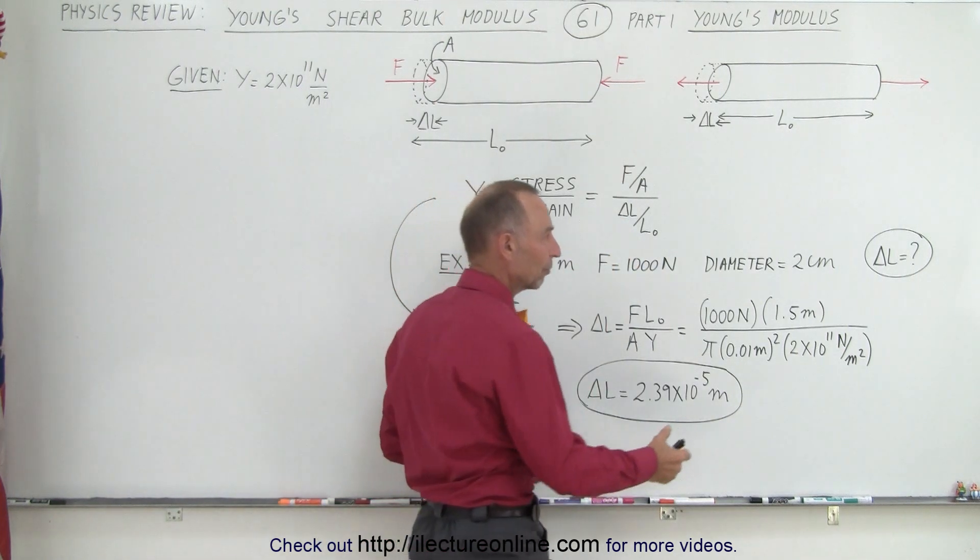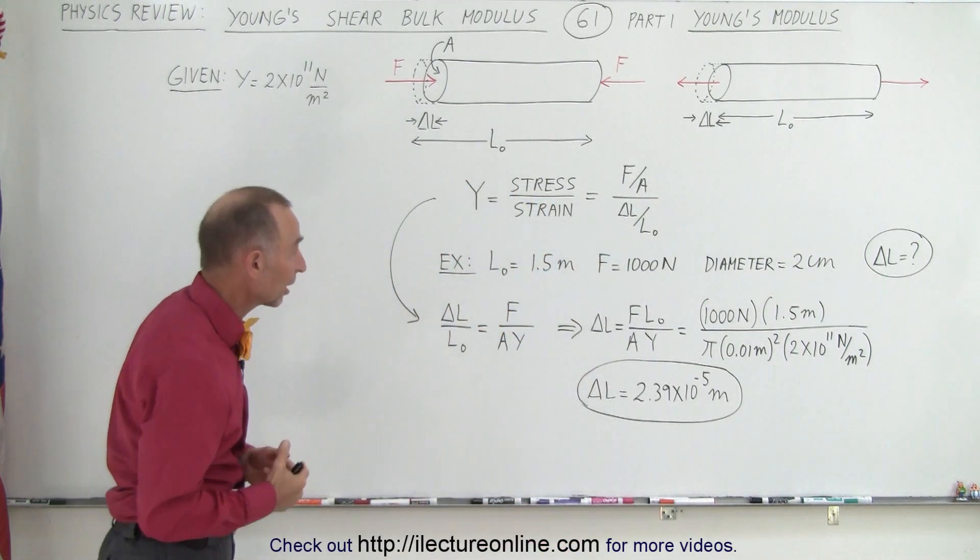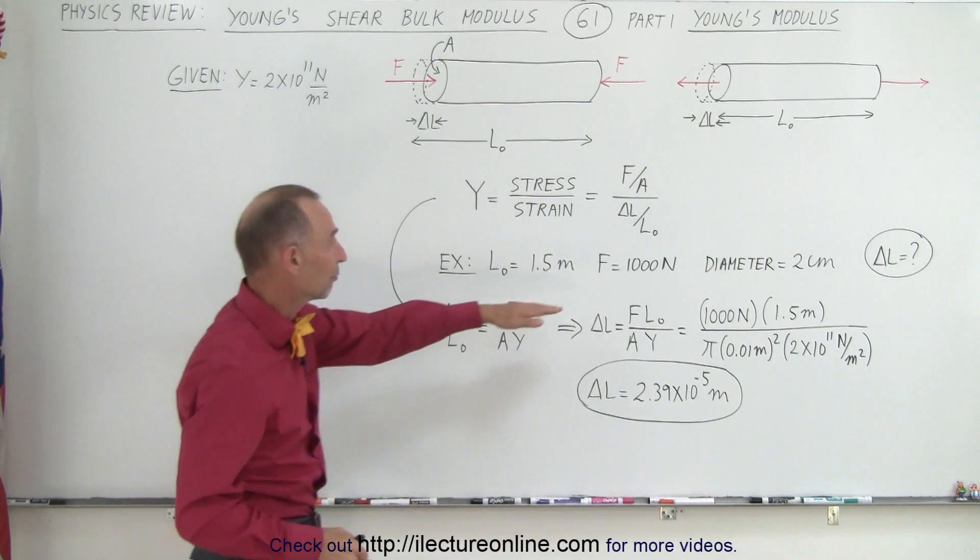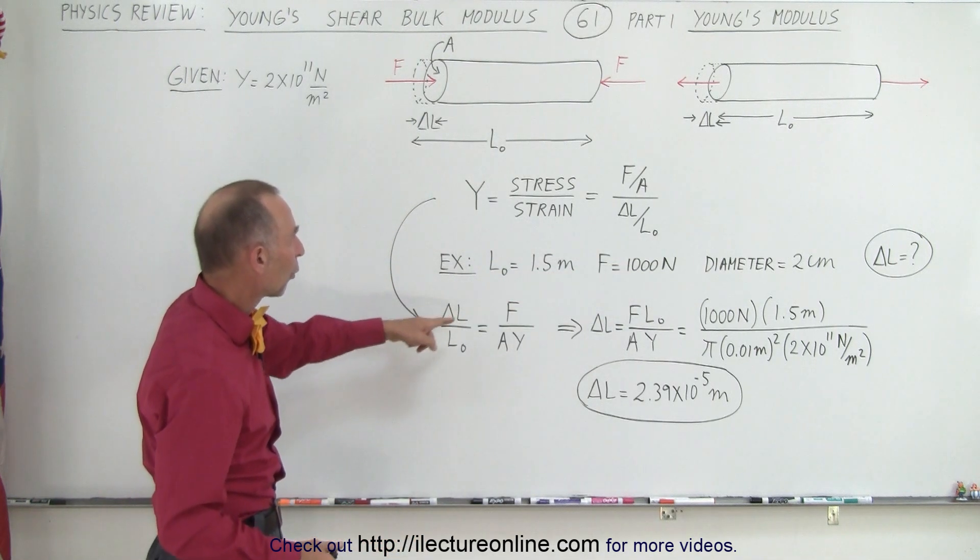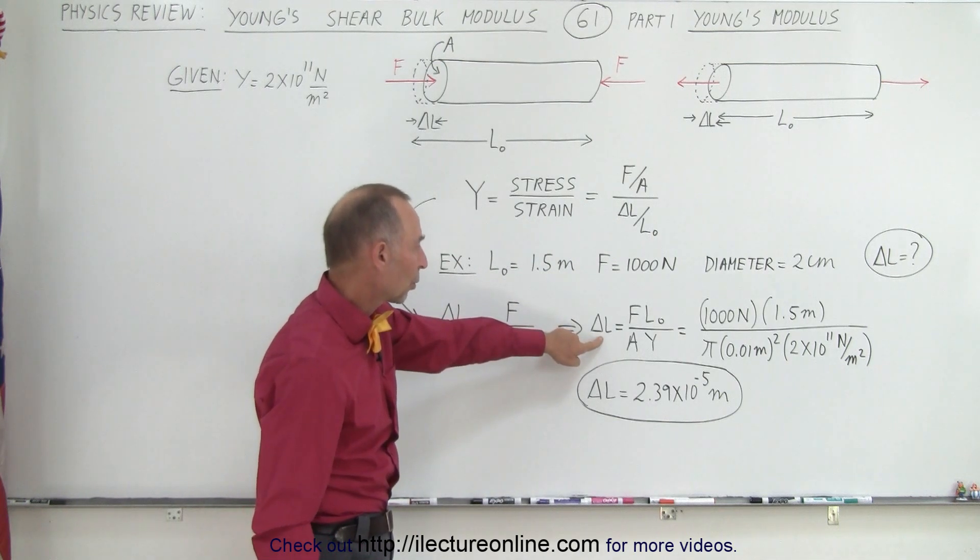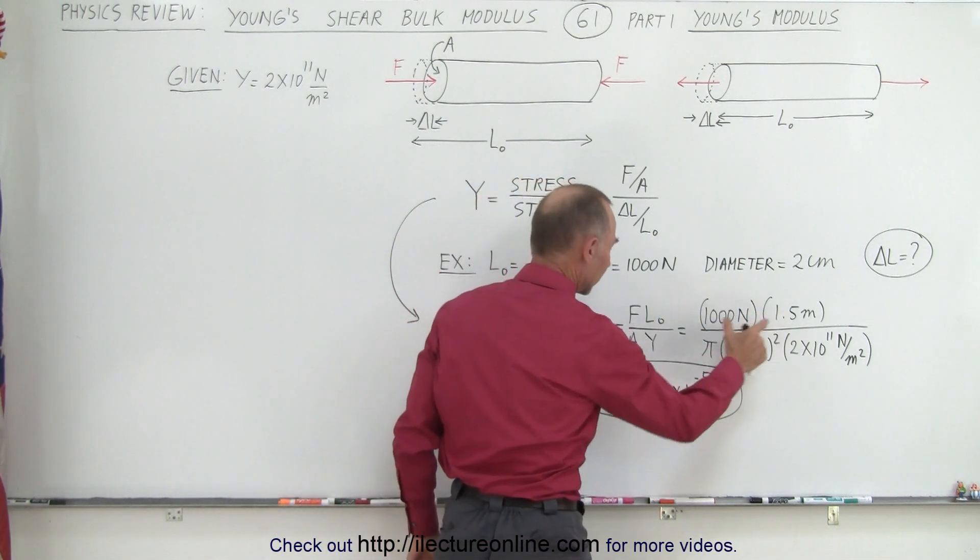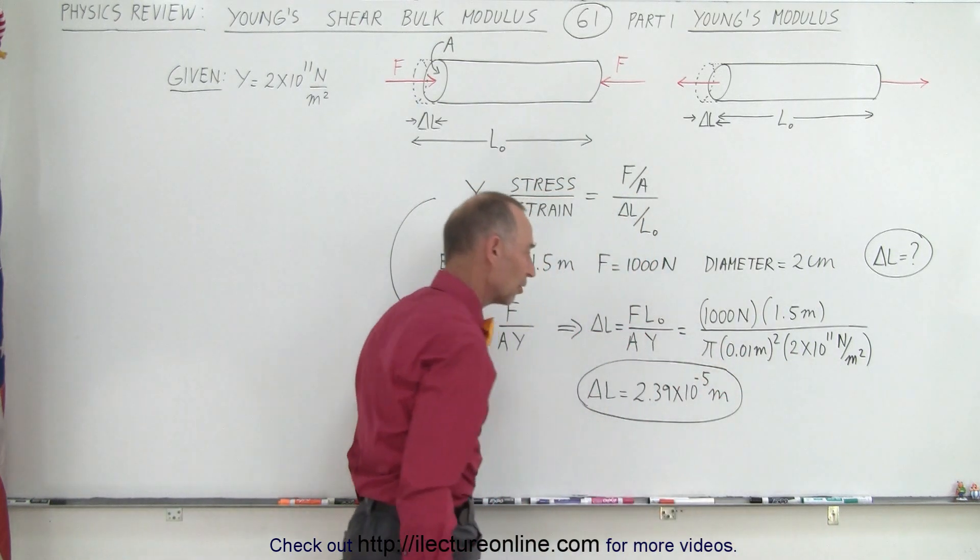Typically they want you to figure out what the elongation is or what the compression is, the change in the length based upon the amount of force you apply. So we solve that equation for the change in length. When we do that we get this equation: we multiply the force times the original length divided by the cross-sectional area and divided by the Young's Modulus.